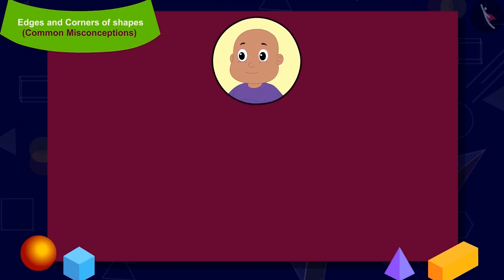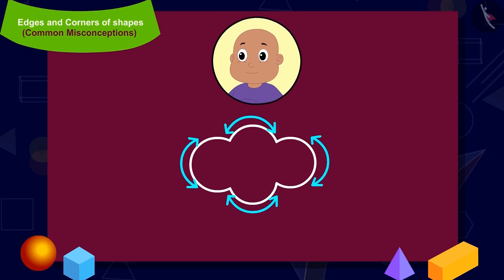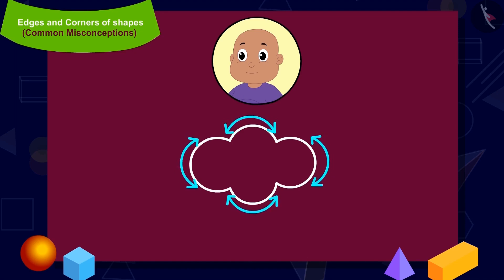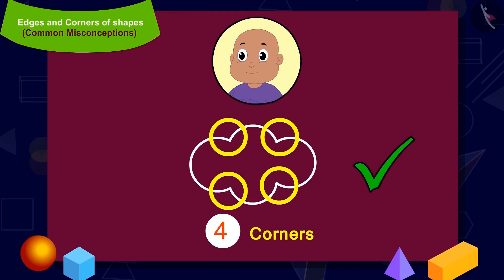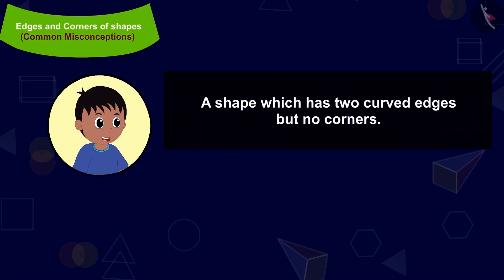Now let us have a look at Bablu's shape. Can you recognize the curved edges of Bablu's shape? You have recognized them correctly. How many total curved edges are there? Four. Can you recognize the corners of Bablu's shape? Correct. Bablu has made a shape where the corners are meeting two curved edges. How many corners are there in total? Four. So is Bablu's shape correct as well? Yes, Bablu's shape is correct as well.